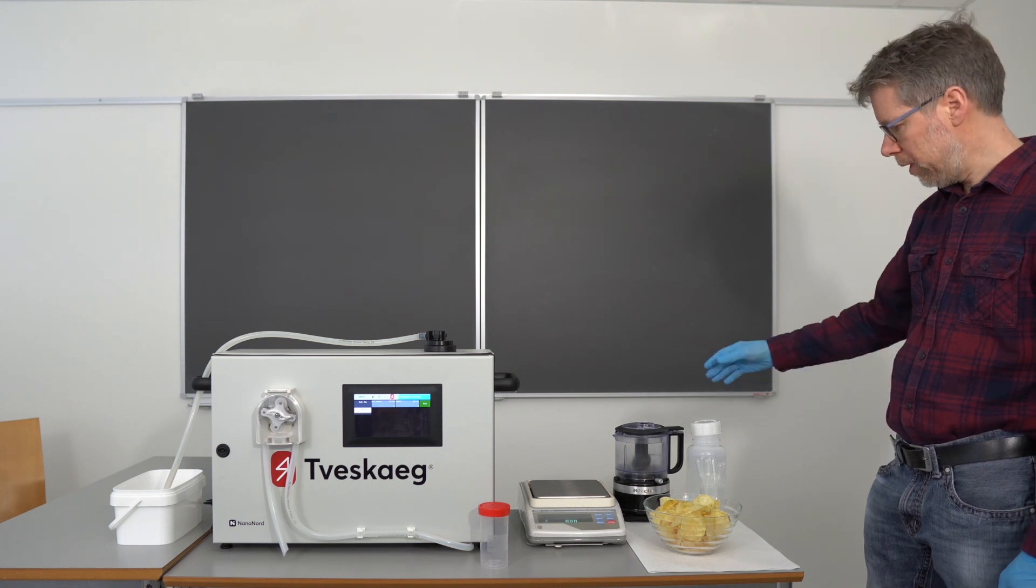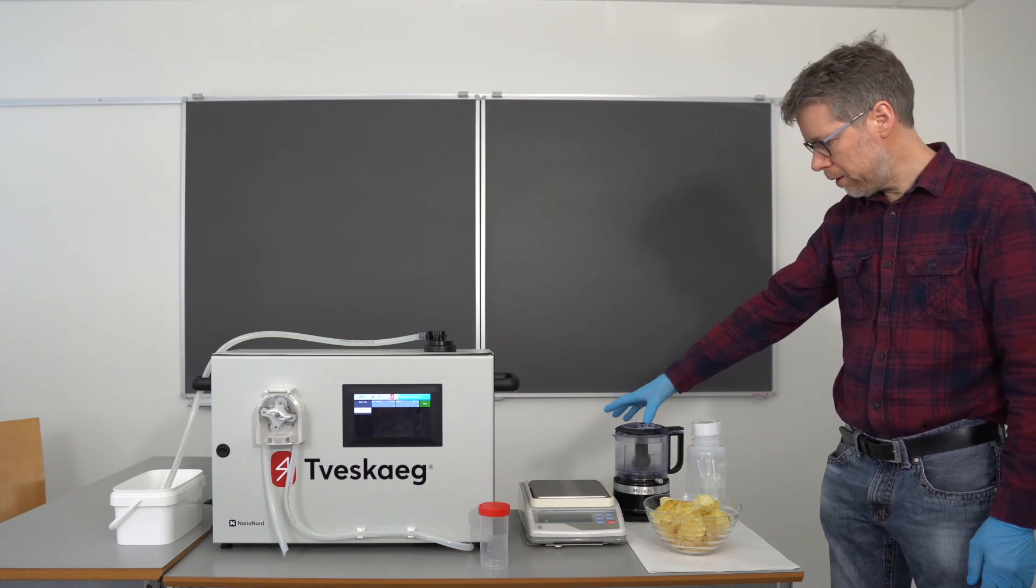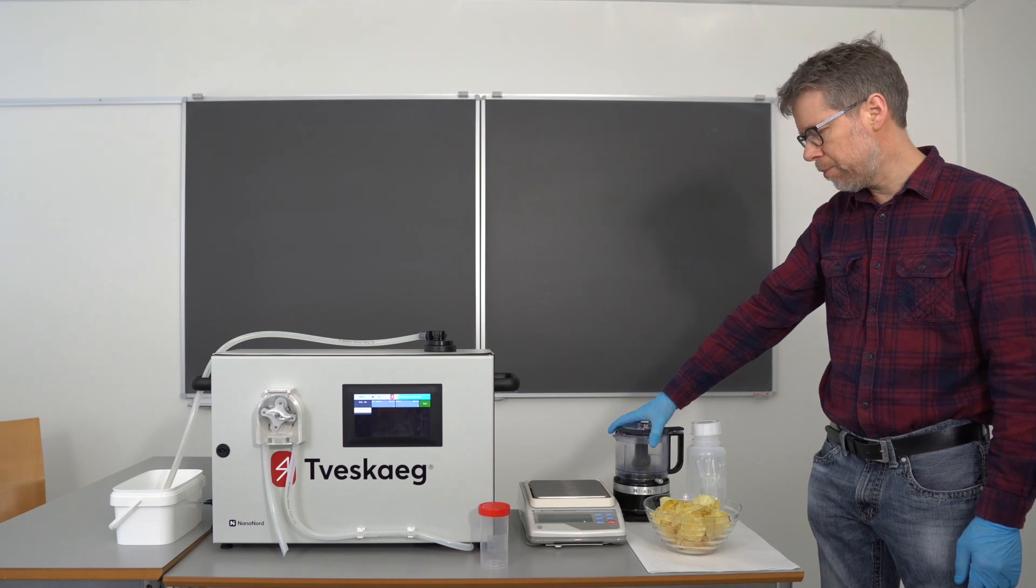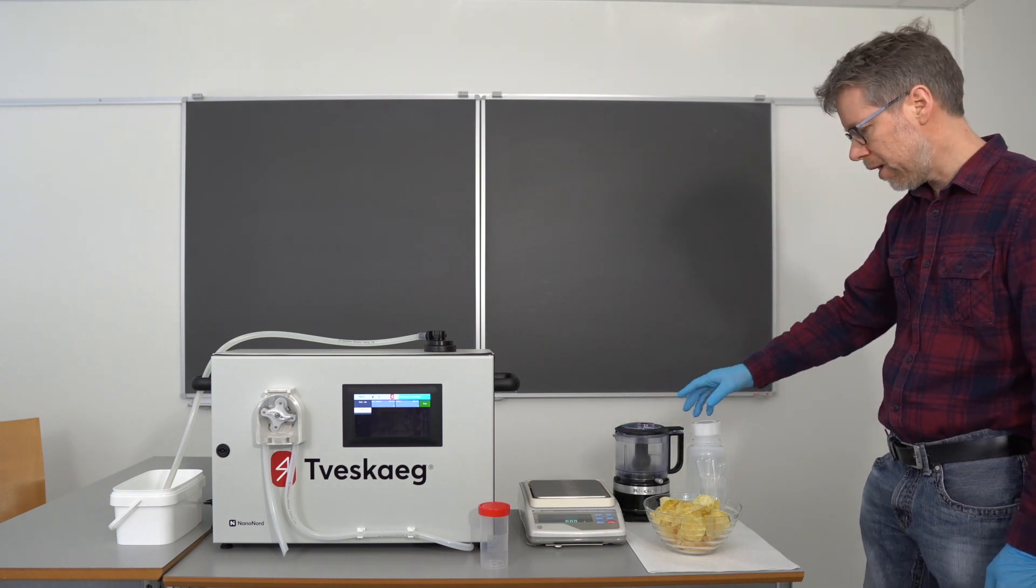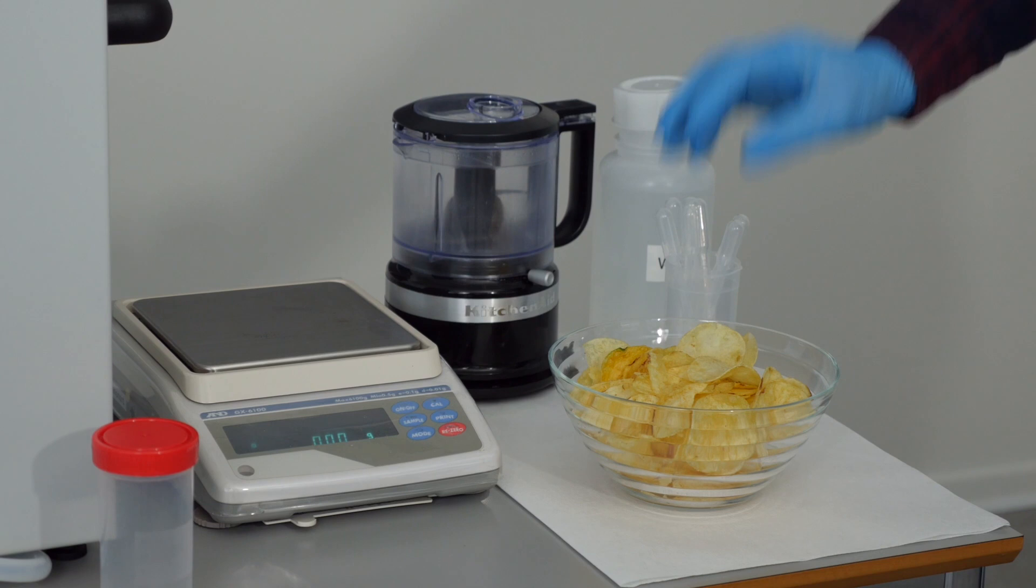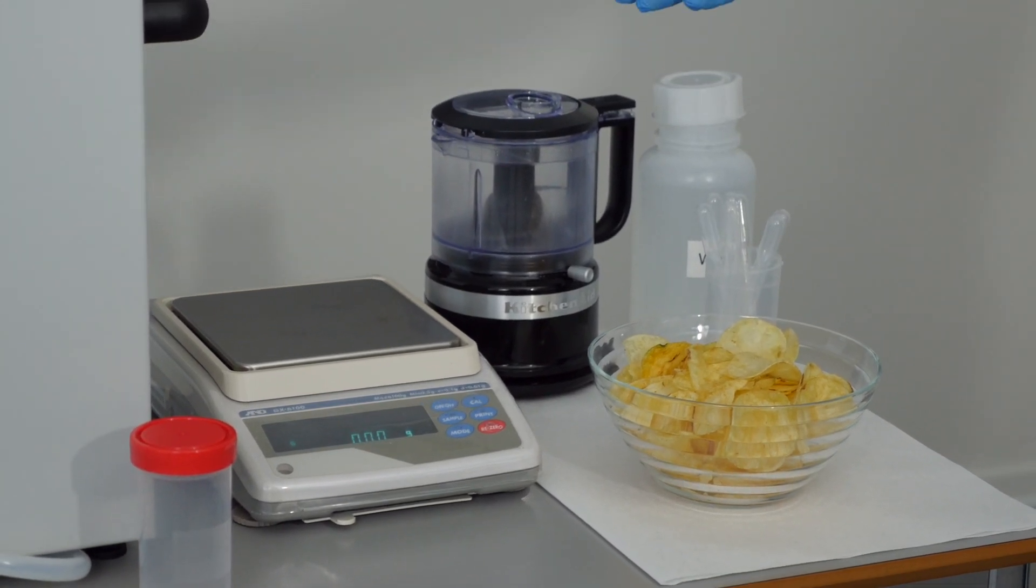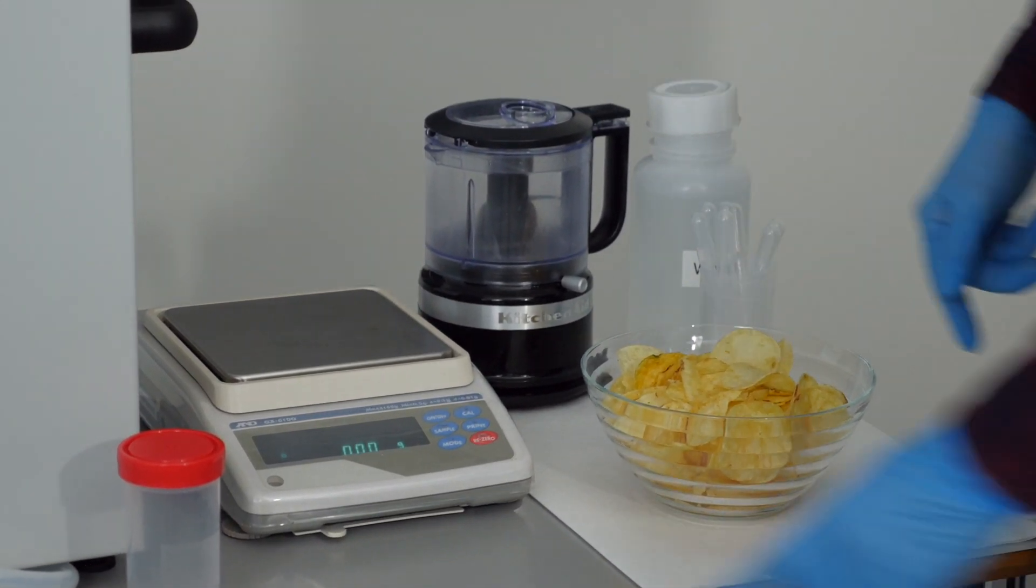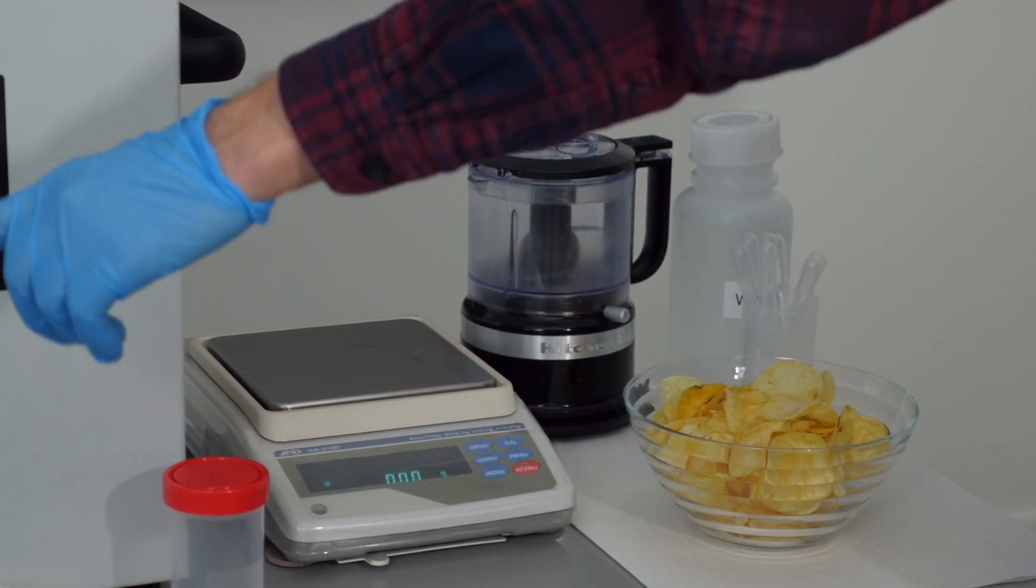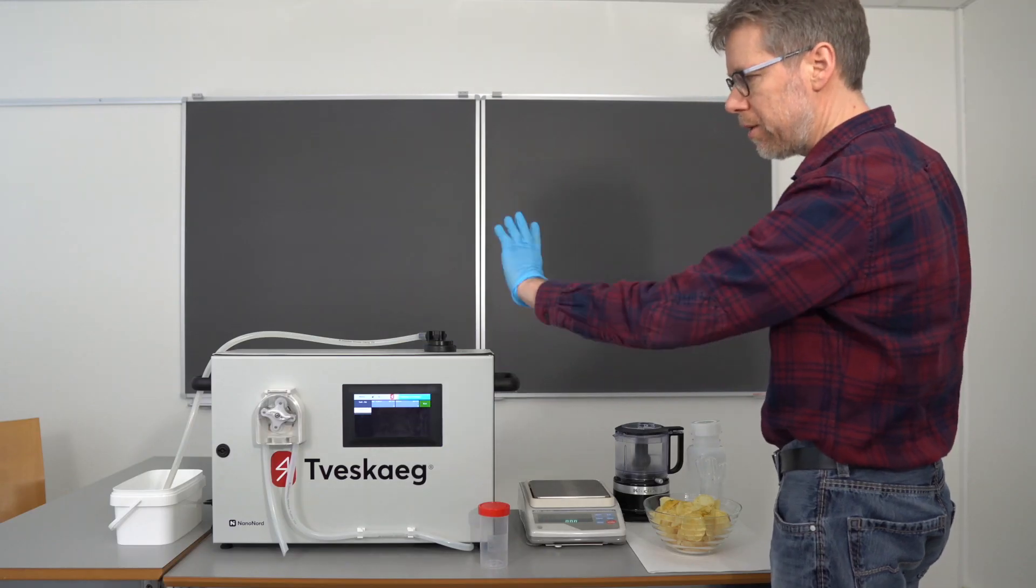In order to do so, what we need is water, we need a grinder - basically not a grinder but a mixer to blend the sample. We're going to use some crisps, make some sort of pulp out of it, transfer the pulp into a container and let the system aspirate the sample, analyze it and spit it out again.